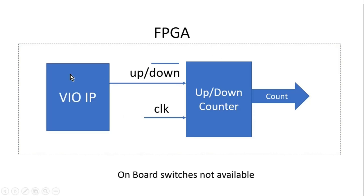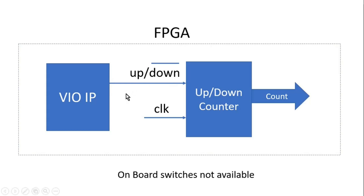There is a special IP available from Xilinx that is called VIO IP. VIO stands for Virtual Input and Output IP. One side of this IP is connected to the JTAG chain, and on the other side we can have any number of input and output signals of any width. In this case we are going to use only output signals, because we need to drive the up-down signal of this counter, which is only one bit wide. We are not going to use any input signal of this VIO IP.